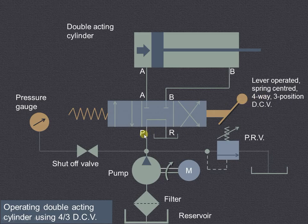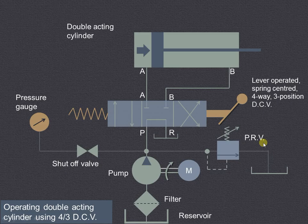The 4 way refers to ports P, A, B, and R, whereas the 3 positions stand for left envelope mode, central position, and right envelope mode. This is the double acting cylinder in which fluid is admitted on both sides of the piston. The pressure relief valve is used to relieve the hydraulic circuit when system pressure exceeds design pressure. The pressure gauge senses and indicates the pressure inside the circuit.